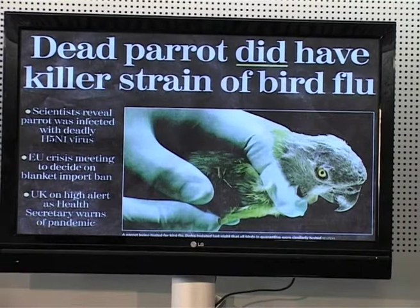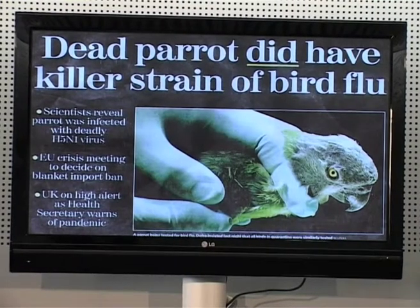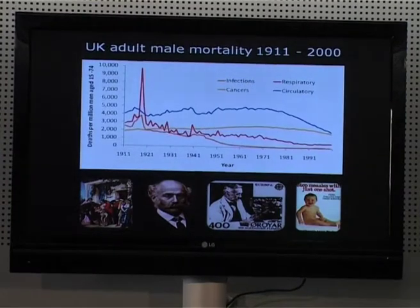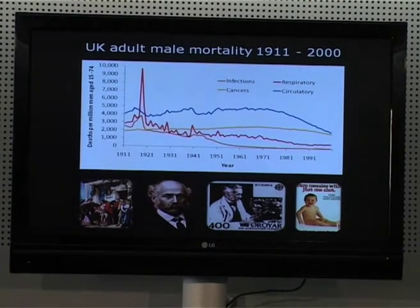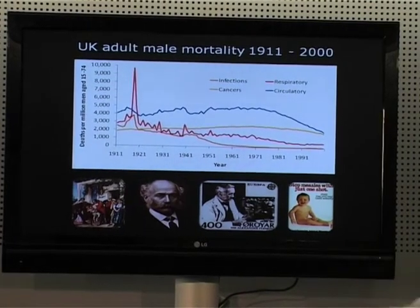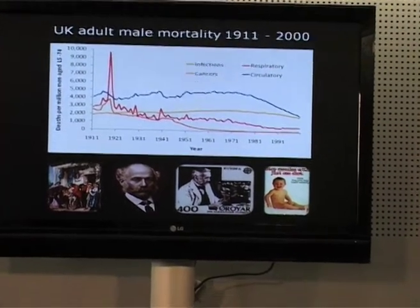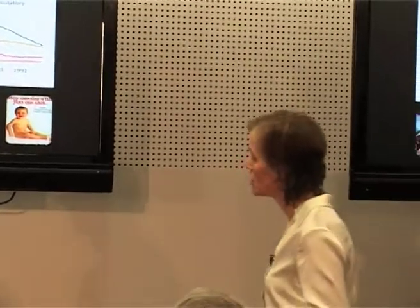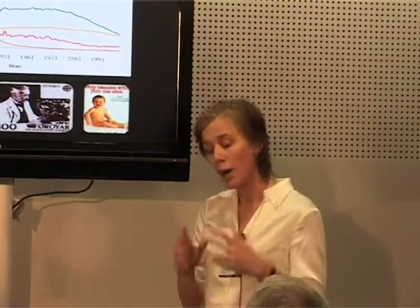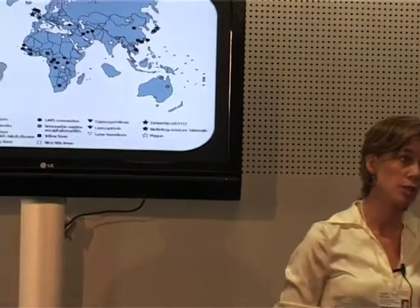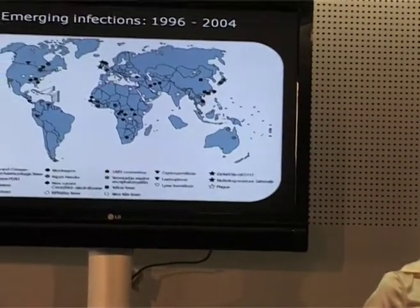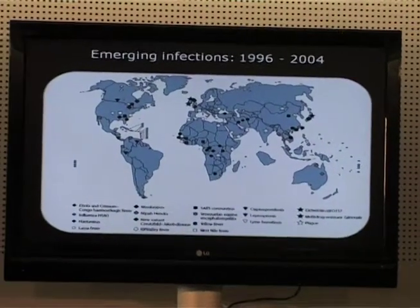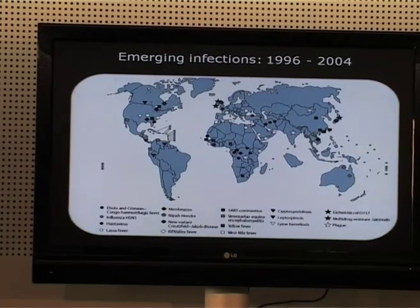Nevertheless, if you live in a wealthy country, you're actually very unlikely at the moment to die of an infectious disease. These pictures show UK adult male mortality through the last century, and the brown line is death due to infection. You see it dropping away effectively to zero with the introduction of antibiotics in the mid-1940s. However, elsewhere in the world, about a quarter of people do still die because of infectious diseases, and a large part of that threat is caused by these so-called emerging infections.